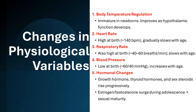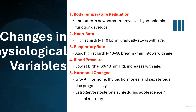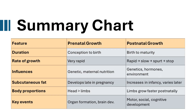Estrogen and testosterone surge during adolescence, leading to sexual maturity. Growth velocity pattern: 0–2 years — rapid growth (infantile phase); 2–12 years — steady but slow growth; 12–18 years — pubertal growth spurt; greater than 18 years — growth ceases.